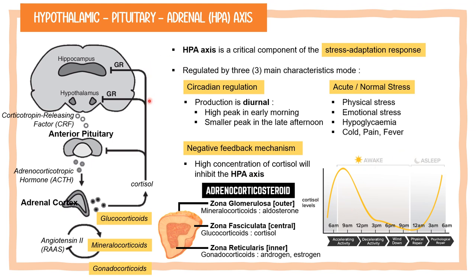The stress response triggers the paraventricular nucleus of the hypothalamus, which contains neuroendocrine cells that release the hormone known as corticotropin-releasing hormone, or CRH. This CRH stimulates the anterior lobe of the pituitary gland to secrete adrenocorticotropic hormone, also known as ACTH. ACTH is derived from pro-opiomelanocortin, or POMC, a large protein synthesized in the pituitary.